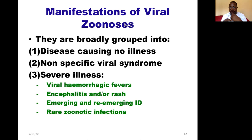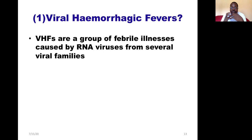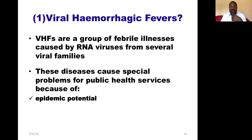We also have the last group of rare zoonotic infections. Viral hemorrhagic fevers are a group of febrile illnesses caused by RNA viruses from several viral families — not a single viral family. All of them have epidemic potential, so they all have the potential to cause epidemic diseases.